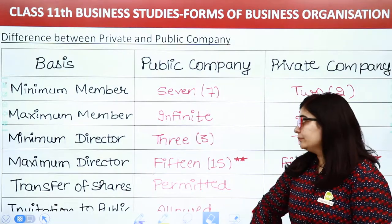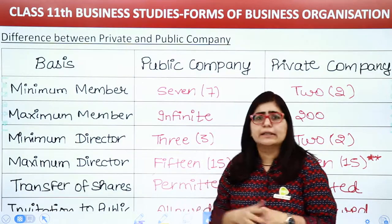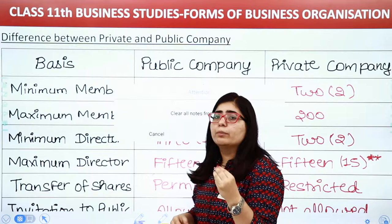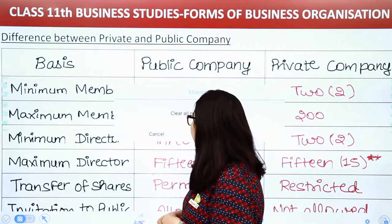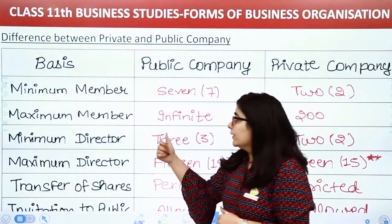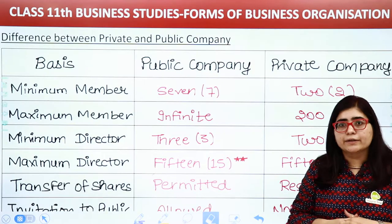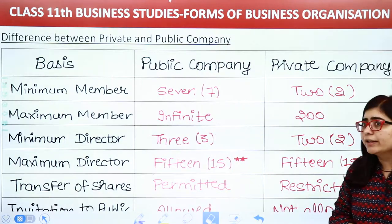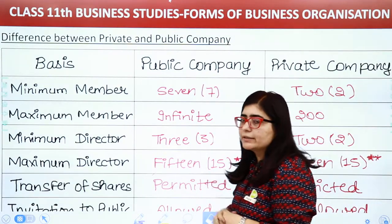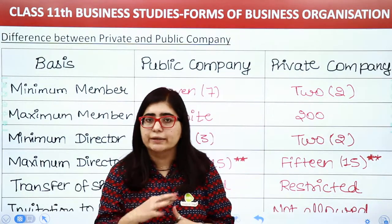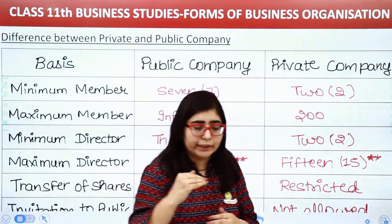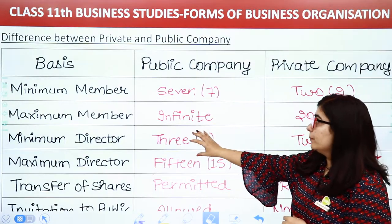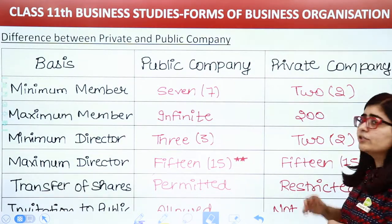Next, how many directors are required? If you have opened a public company, a minimum of 3 directors are required. On the other side, for a private company, you only need a minimum of 2 directors. So in public it is 3, and in private it is 2.